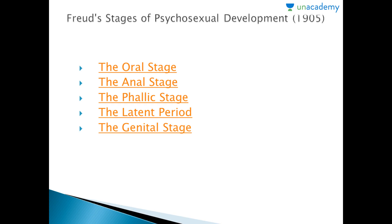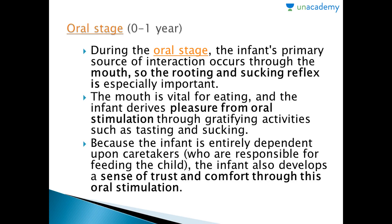The first theory we are going to discuss is Freud's theory of psychosexual development, given by Sigmund Freud in 1905. It has five stages: the oral stage, the anal stage, the phallic stage, the latent period, and the genital stage. In the oral stage, seen from 0 to 1 year, the infant's primary source of interaction occurs through the mouth. The rooting and sucking reflex is especially important, and the infant derives pleasure from oral stimulation through activities such as tasting and sucking.